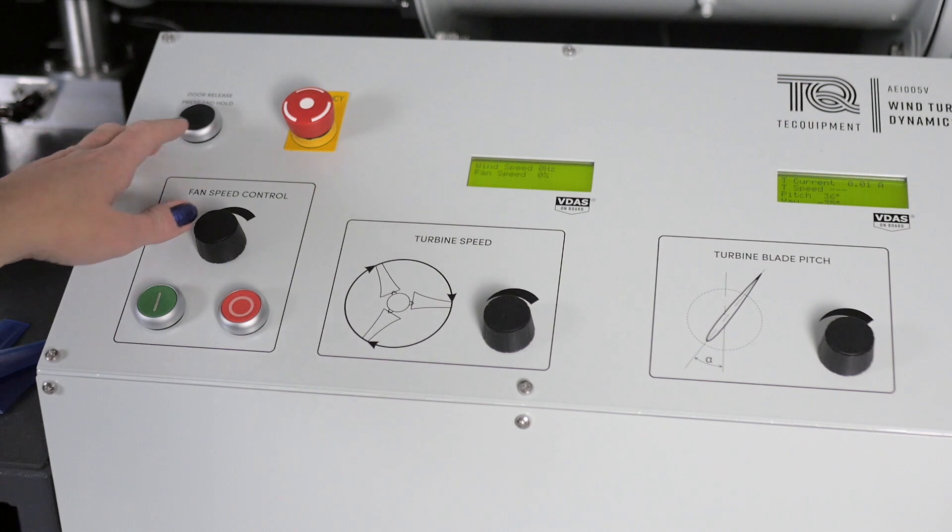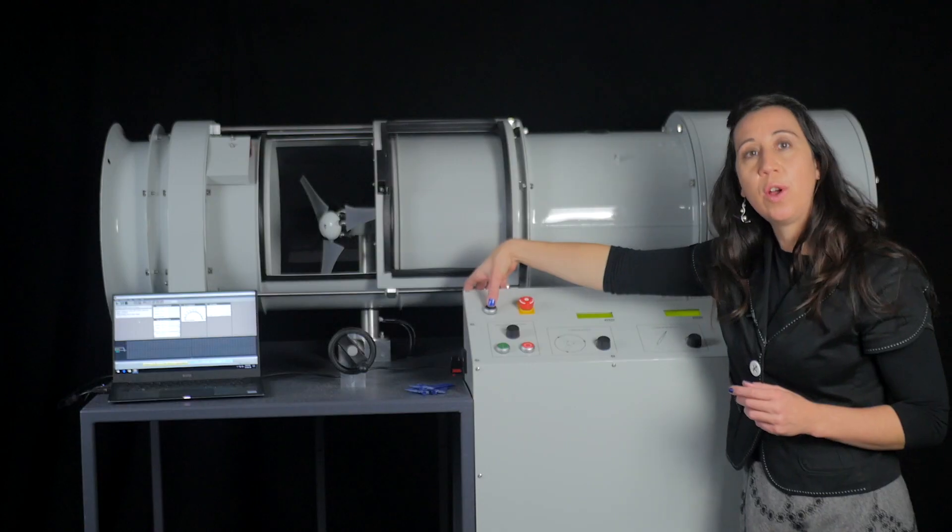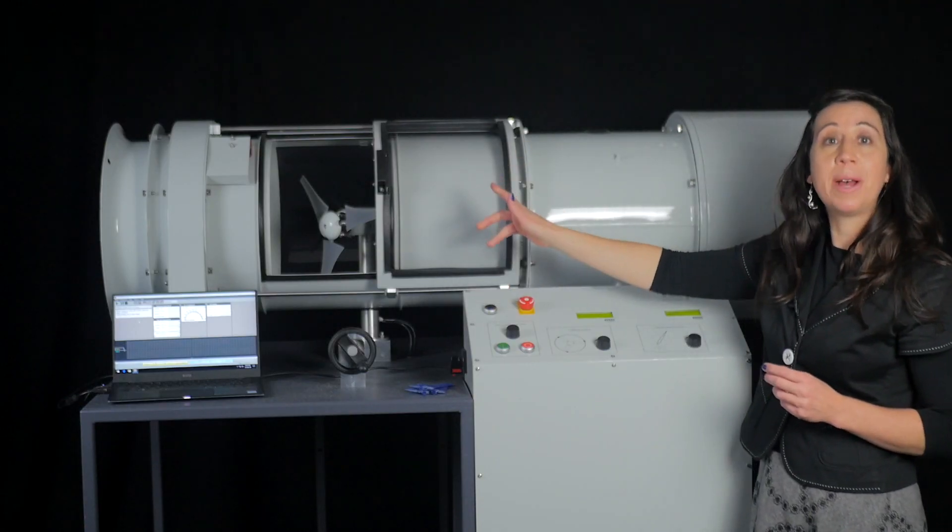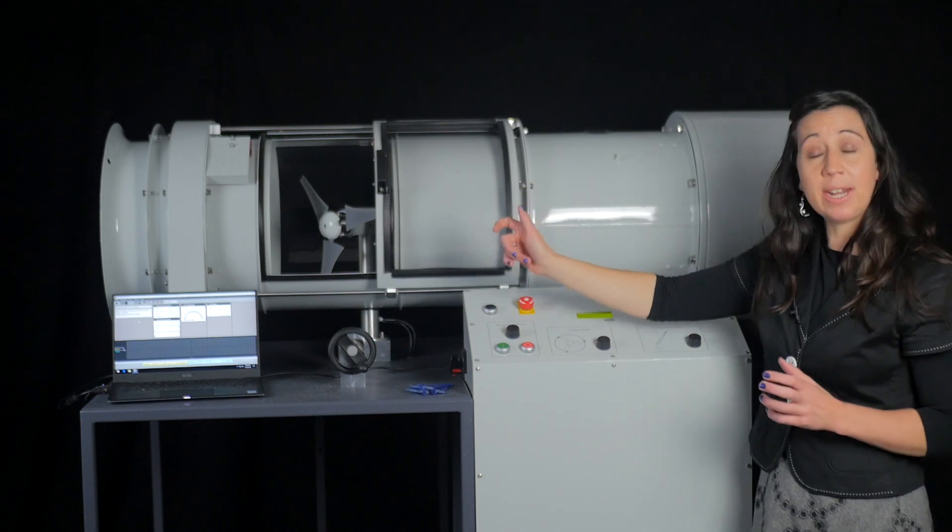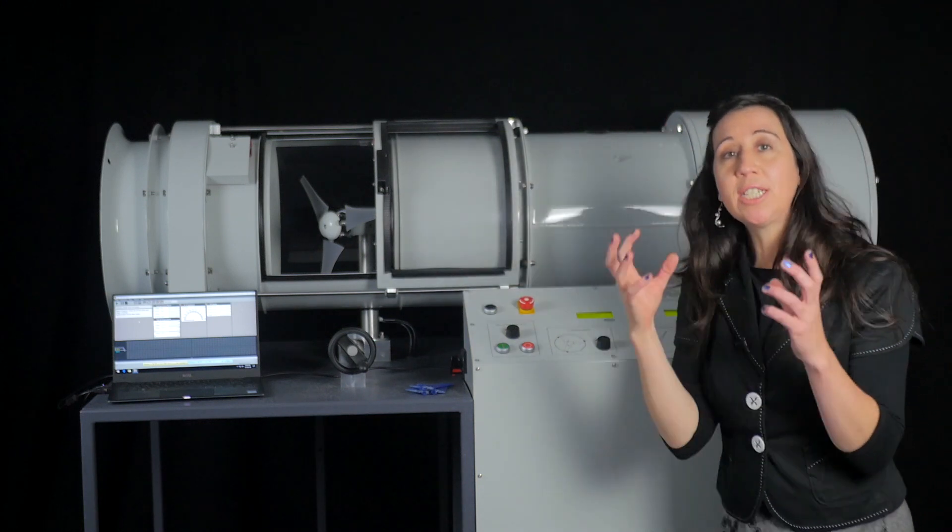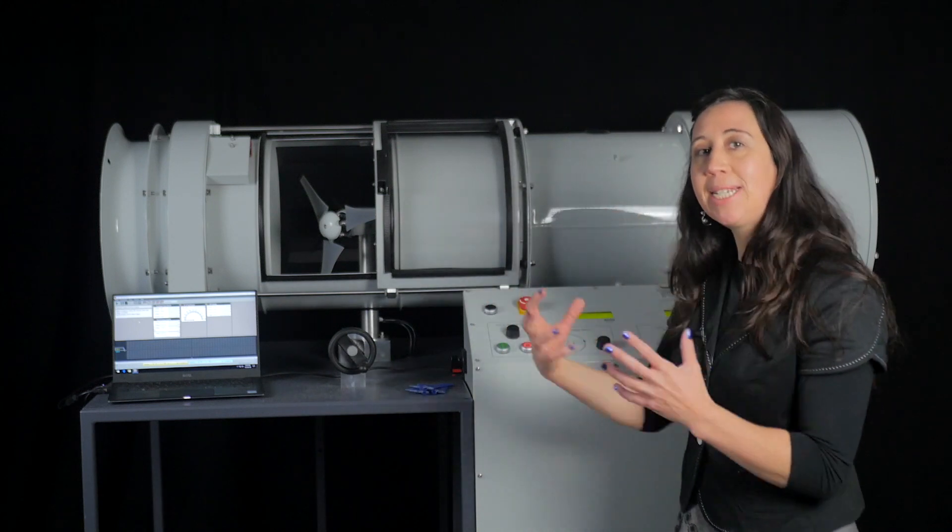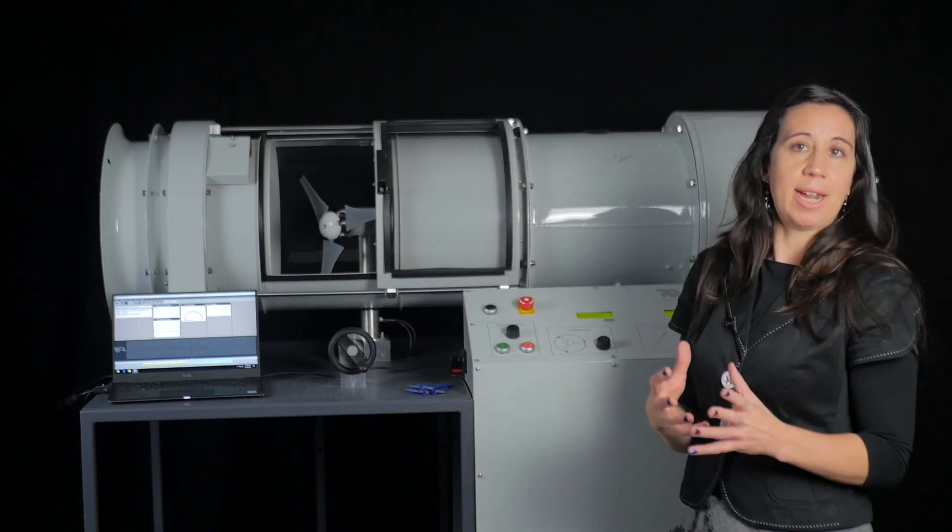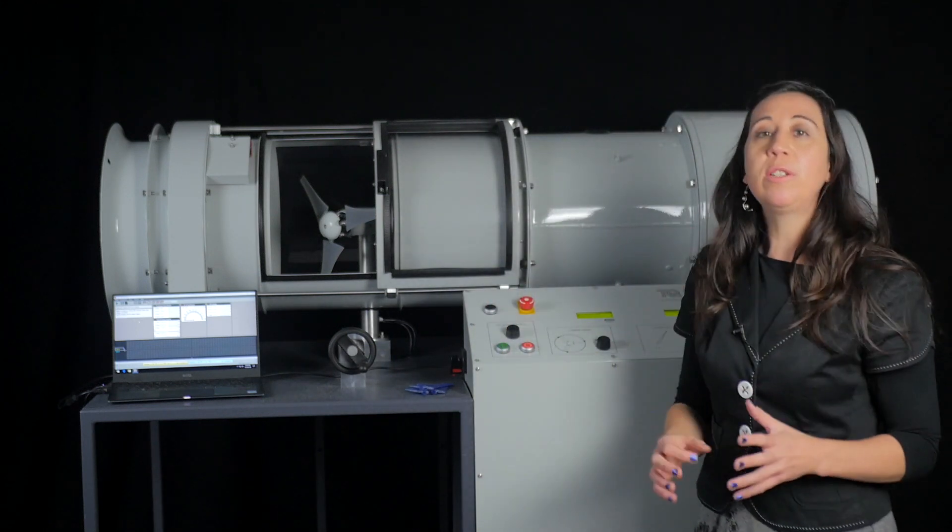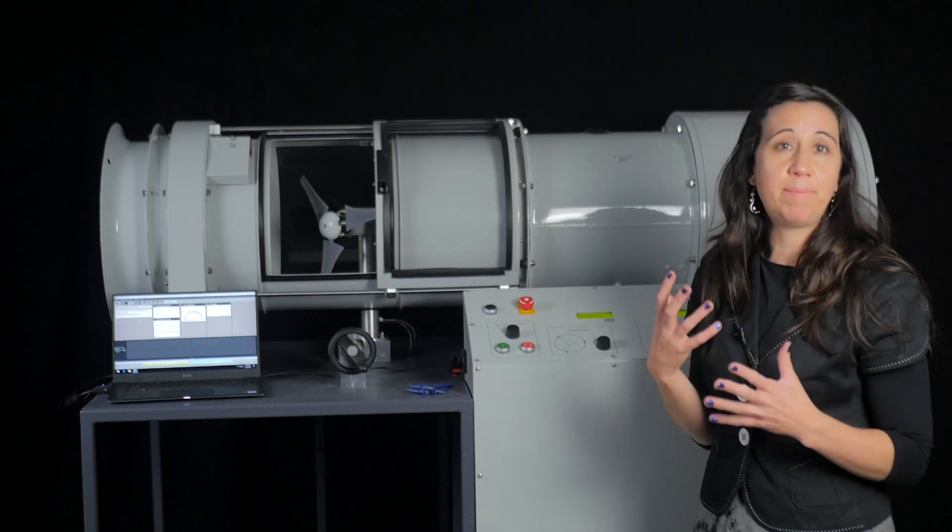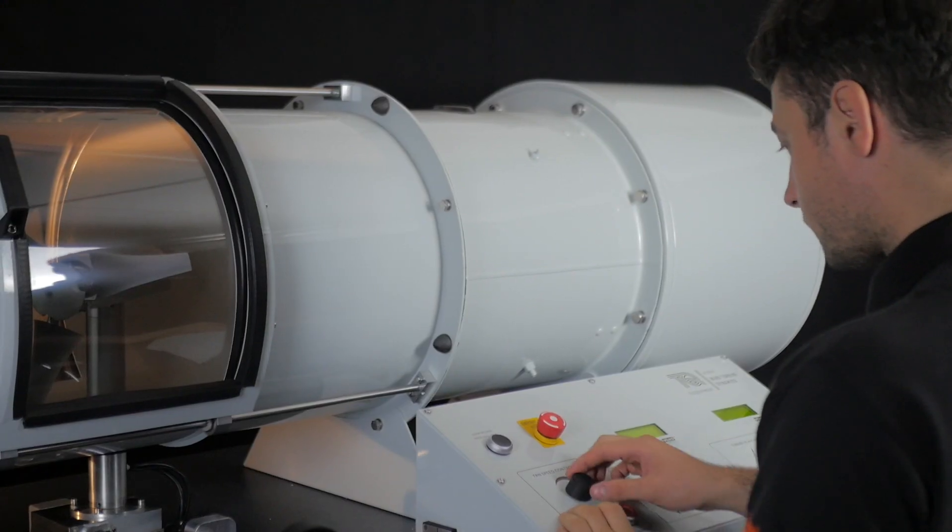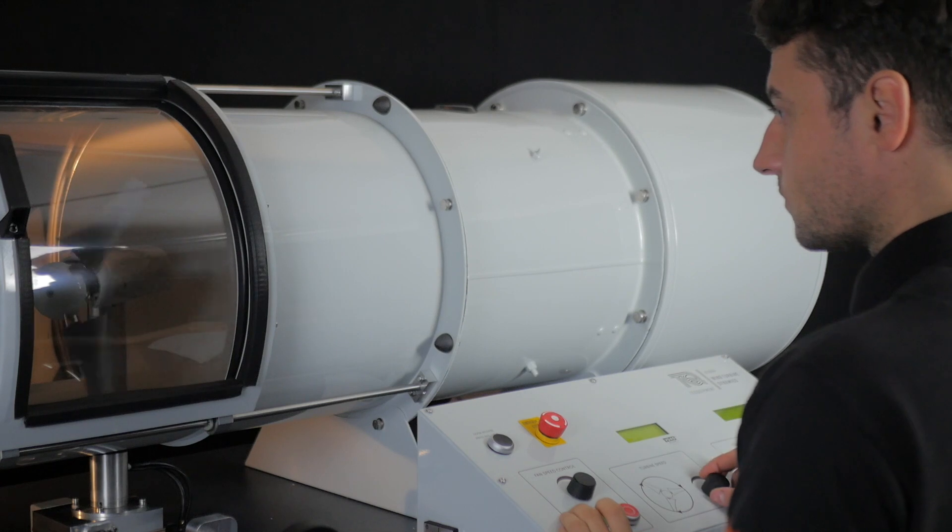And this is the button to release the interlocking door which brings me nicely on to talk about the various safety features that have been incorporated. The risk of turbine over speed or over current has been mitigated by a smart shutdown system. This means if students were to run their 3D printed blades beyond the operating range, the turbine would cut out and shut the airflow off.